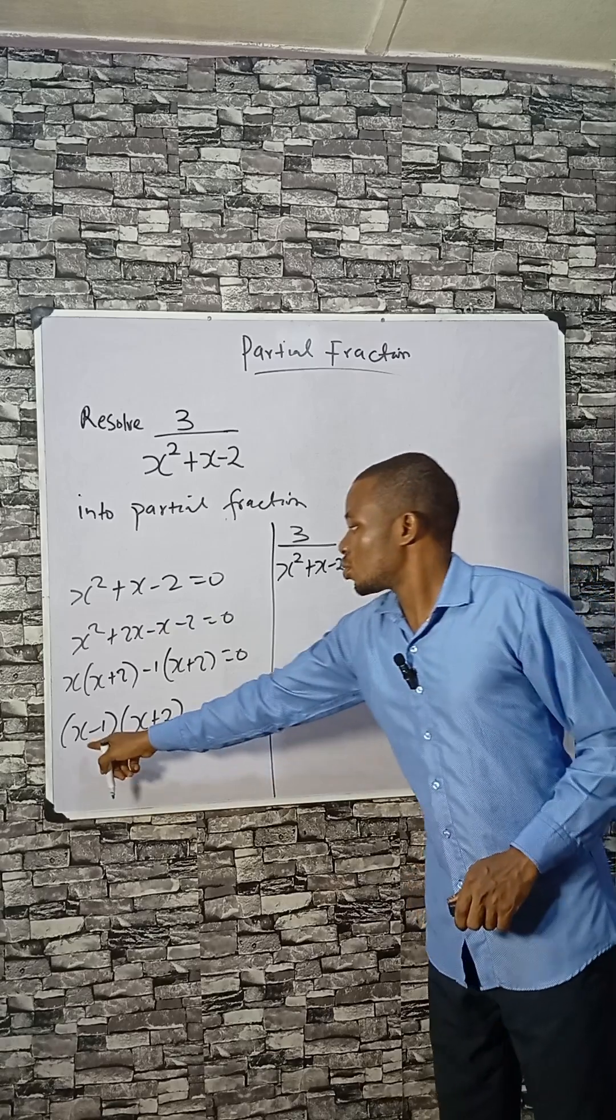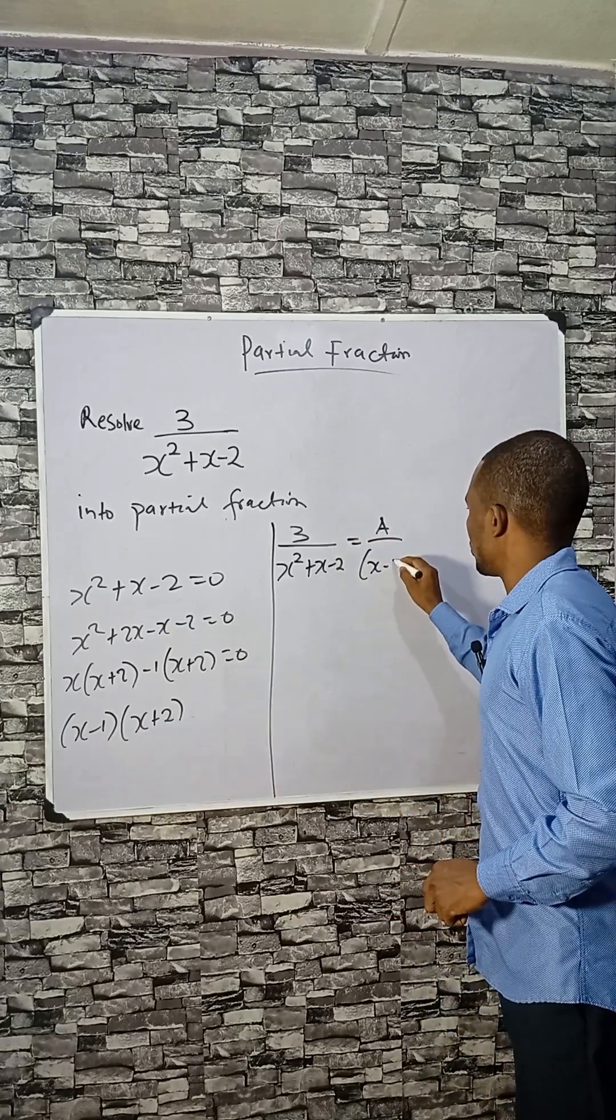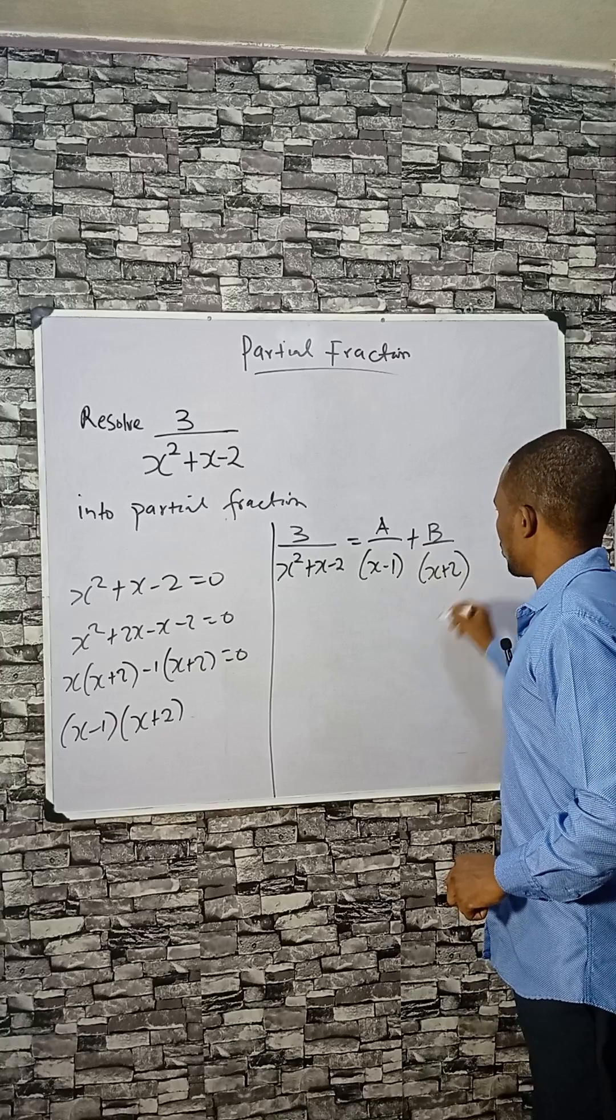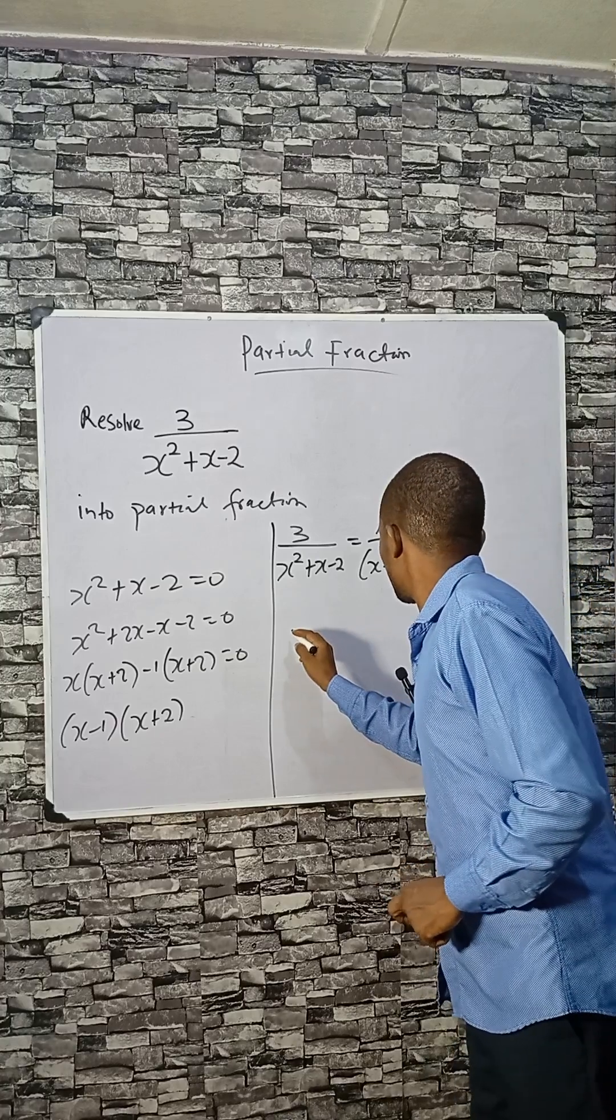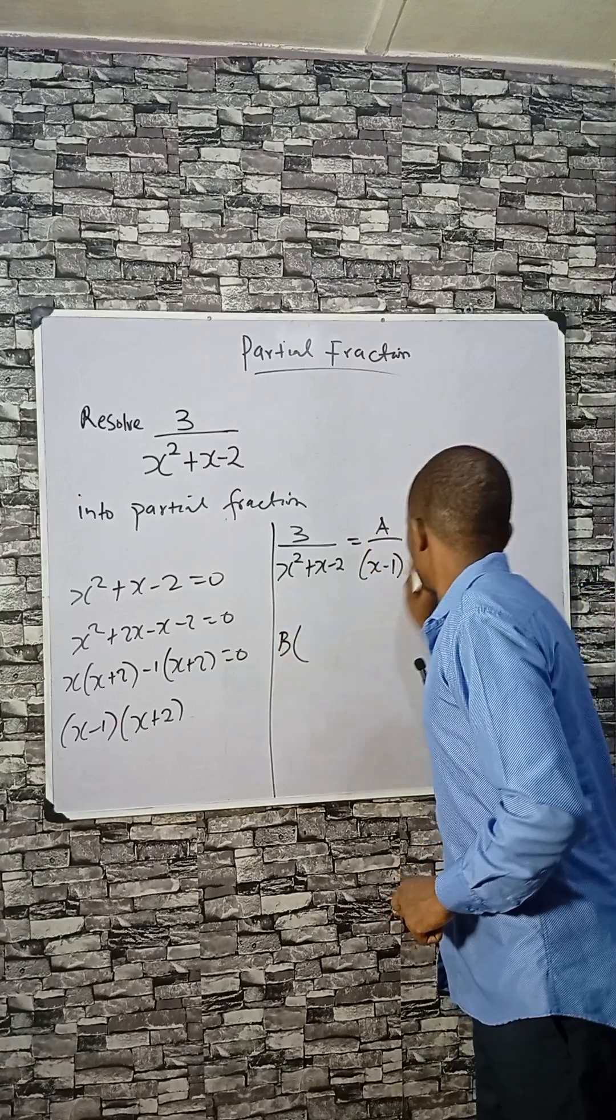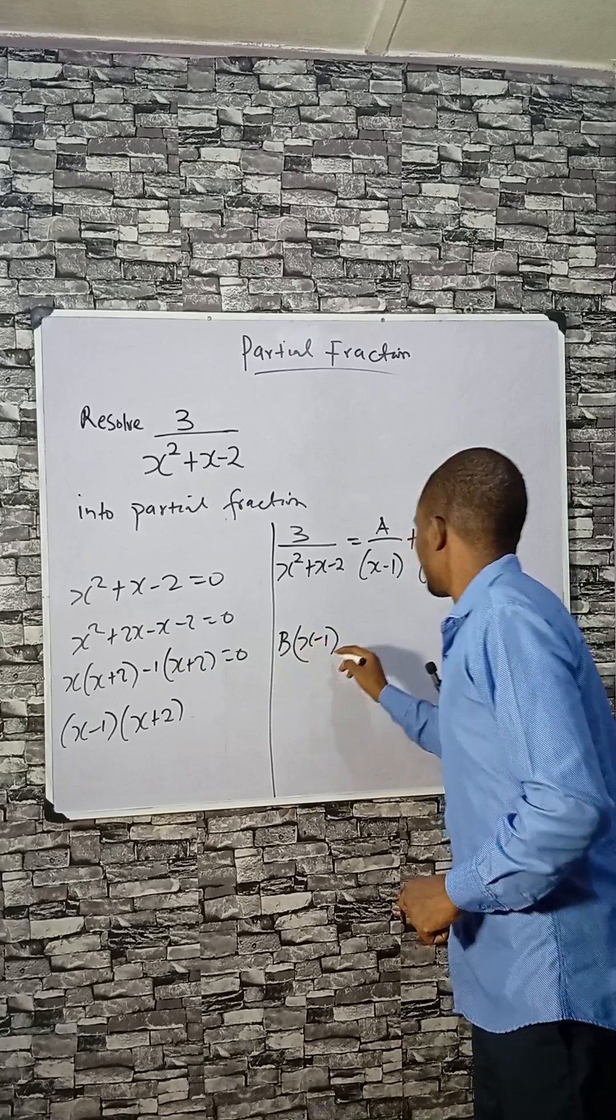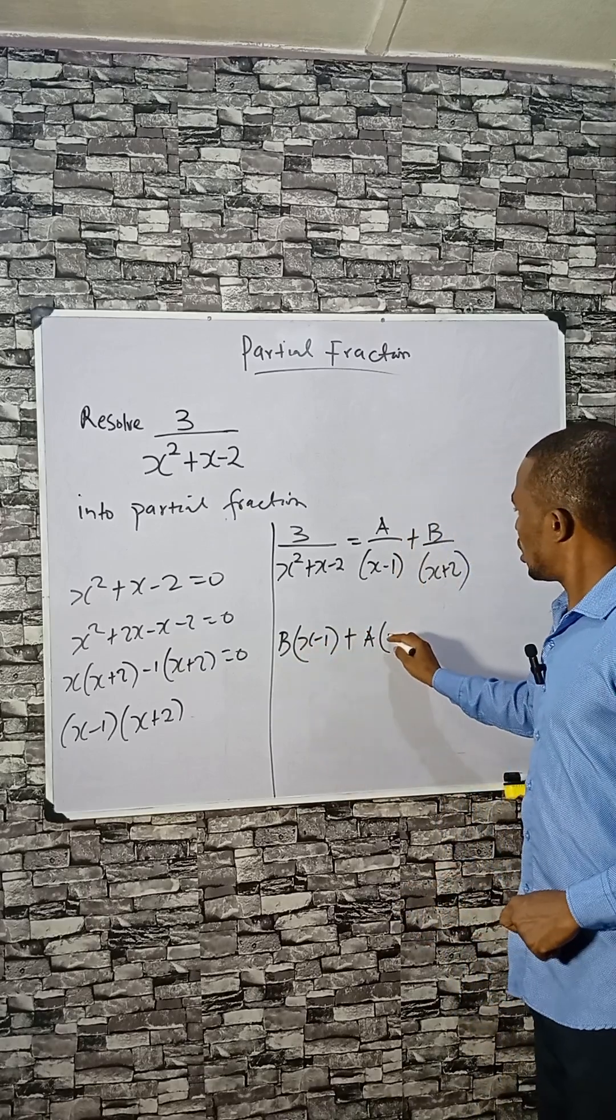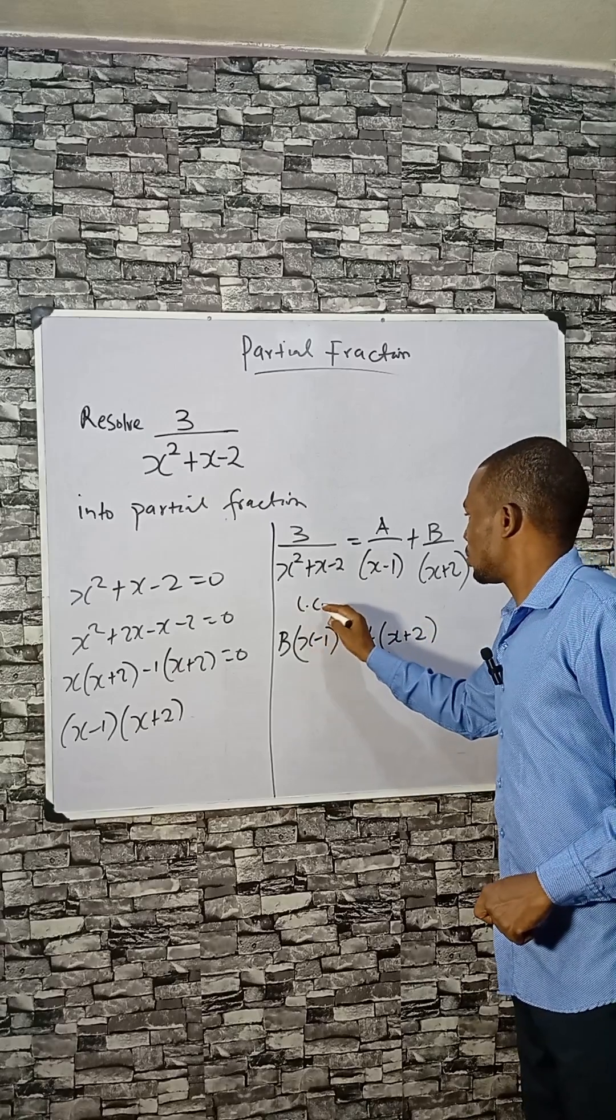This equals A divided by the first factor x minus 1 plus B divided by the second factor x plus 2. What then happens is that B times x minus 1 plus A times x plus 2. What I just did there is to find the LCM.